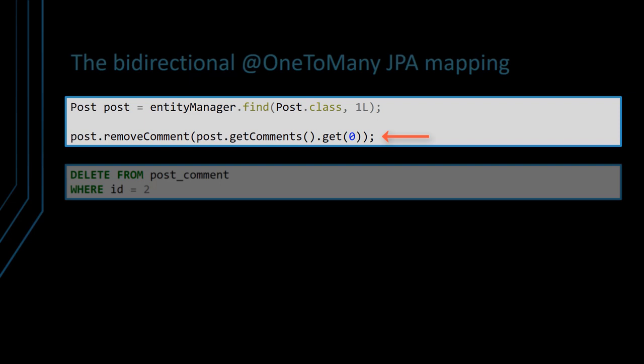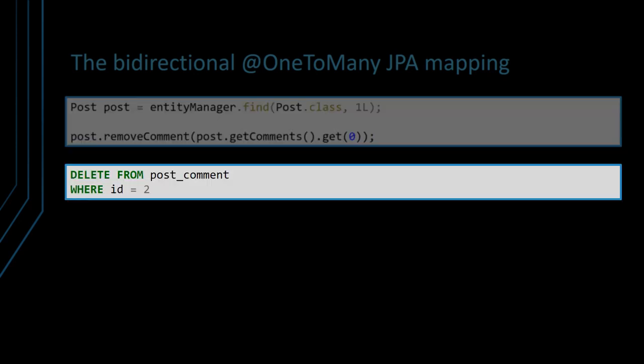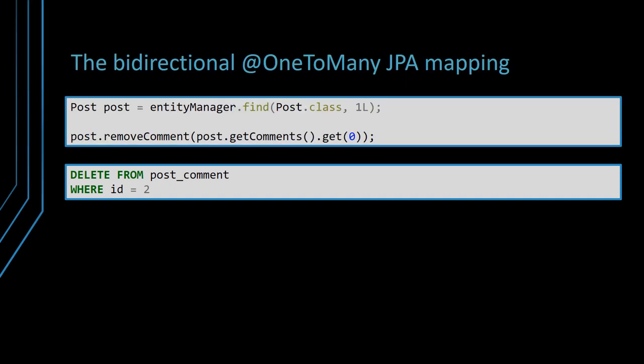When removing a post comment entity from the comments collection in the parent post entity, because we set the orphanRemoval attribute to true on the one-to-many annotation, Hibernate is going to delete the associated post comment record. Notice the use of the removeComment utility method, which not only removes the post comment entity from the comments collection in the parent post entity, but also sets to null the post property of the post comment child entity.